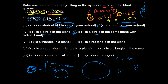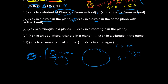Looking more carefully, the second set — circles with radius 1 — is actually the subset of the first set of all circles in the plane. But the question asks us whether the first set is the subset of the second one, and the answer is no, the first set is not the subset of the second.